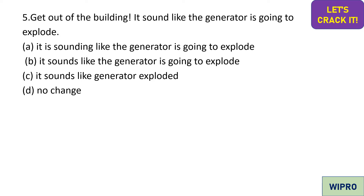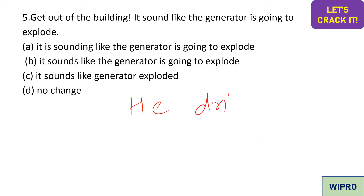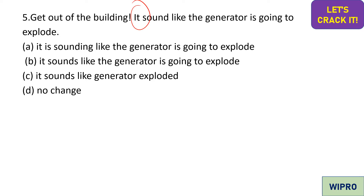Fifth question: 'Get out of the building, it sound like the generator is going to explode.' We need to make the necessary changes. The grammatical rule is: when using 'he,' 'she,' or 'it' in present tense, we use V1 plus 's.' So it should be 'it sounds like the generator is going to explode.' Option B is the correct answer. 'It is sounding' in option A is grammatically acceptable but option B is preferred.